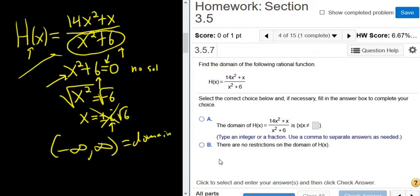So if we go over here, it looks like it's going to be choice B. There are no restrictions on the domain of H of x. So whenever you have x squared plus a number on the bottom, that's always going to be the answer.